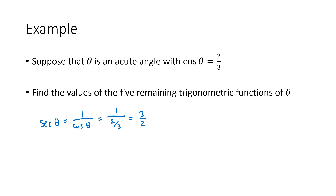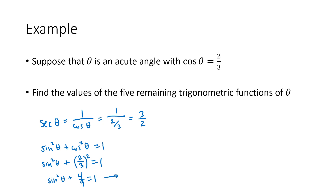Another way we can get another trig function is using a Pythagorean identity. We know that sine squared of theta plus cosine squared of theta equals one. We know cosine of theta is two thirds, so cosine squared is (two thirds) squared. Two thirds squared is four ninths. Continuing to solve, we get sine squared of theta is five ninths — we subtract four ninths from both sides. One is nine ninths, so nine ninths minus four ninths is five ninths. Then we just take the square root of both sides, so sine of theta is the square root of five ninths.